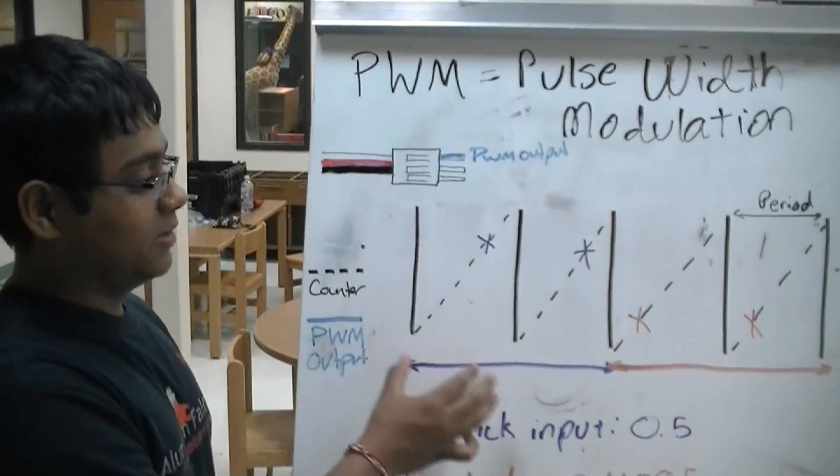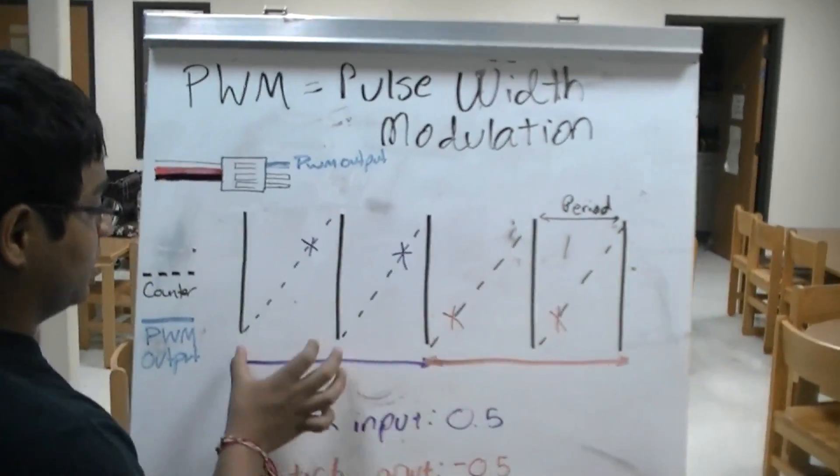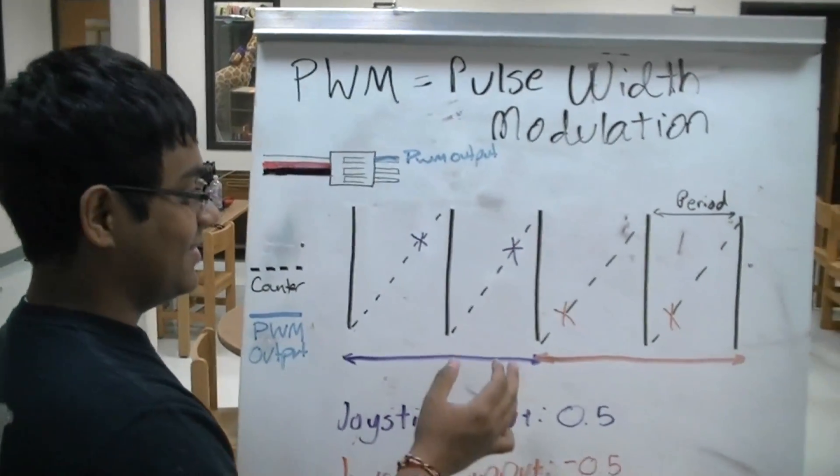This is how the C-Rio works with the PWM. As you can see, we have our periods from our last illustration.